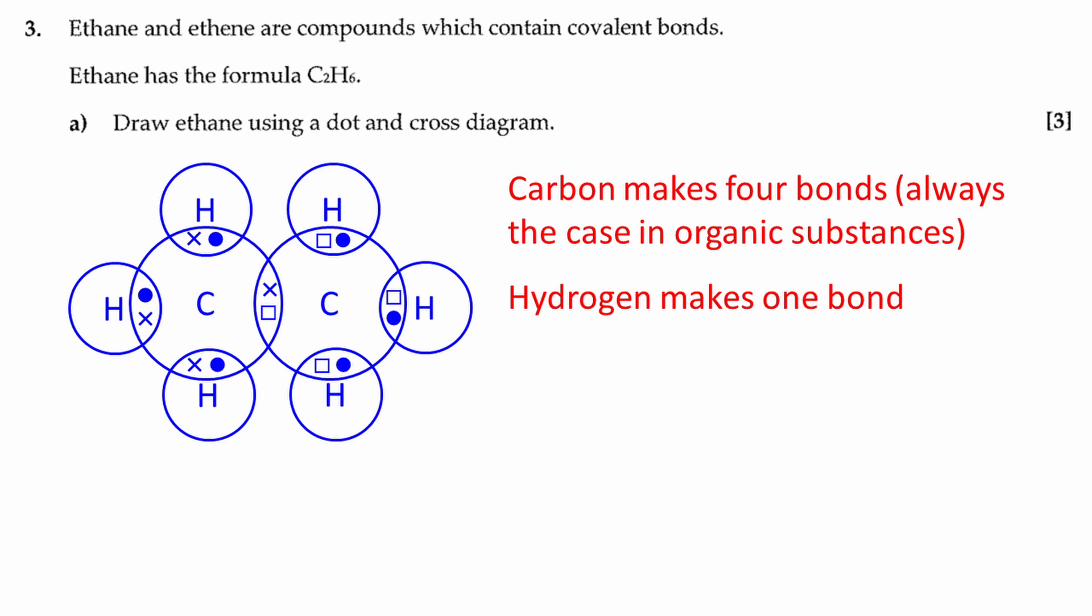Each hydrogen atom has one outer shell electron. I have used dots to represent these. The diagram is now complete.